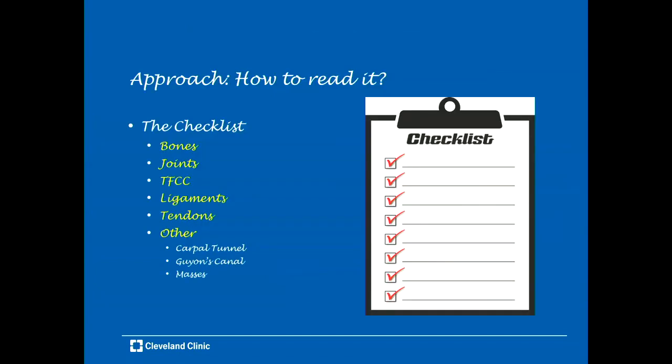The most important thing is to use a checklist. This checklist will include the most common structures routinely evaluated in every wrist MRI, and these include the bones, the joints, the triangular fibrocartilage complex or the TFCC, ligaments, tendons, and other things such as the carpal tunnel, Guyon's canal, and masses.